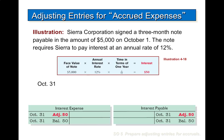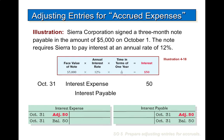As an example, going back to Sierra Corporation: Sierra signed a three-month note payable in the amount of $5,000 on October 1. The note requires Sierra to pay interest at an annual rate of 12%. To calculate the interest: $5,000 (face value) times 12% times 1/12 (one month) equals $50. So the interest we need to record is $50. The journal entry is to debit interest expense $50 and credit interest payable $50. Note that we write ADJ for adjusting entry in the T-accounts so we know what kind of entry it was.